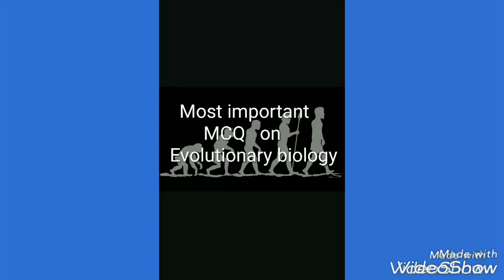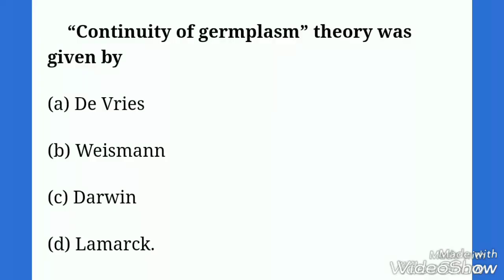The first question is: continuity of germplasm theory was given by? The options are De Vries who has given the theory of mutation, Darwin has given the theory of natural selection, and Lamarck has given the theory of inheritance of acquired characters. So the correct option is Weismann. August Weismann has given the theory of continuity of germplasm.